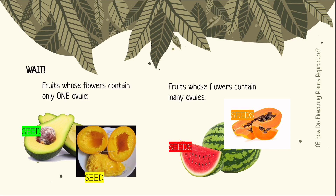Take note: the word 'ovules' can only be used when the flower has not developed into a fruit and thus has not been fertilised. The word 'seed' is only used when the ovule has been fertilised and the flower has developed into a fruit.